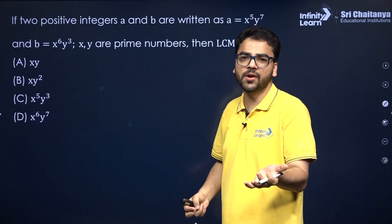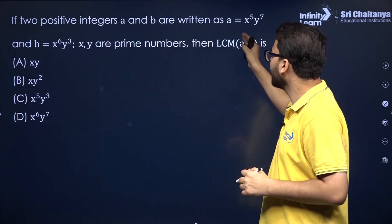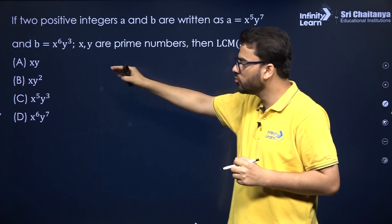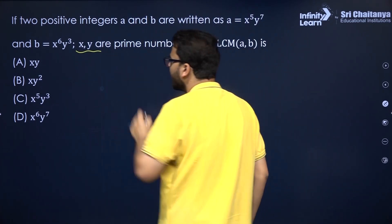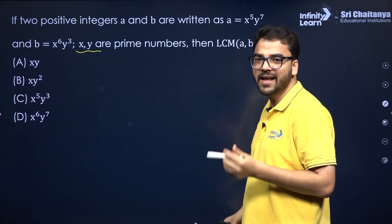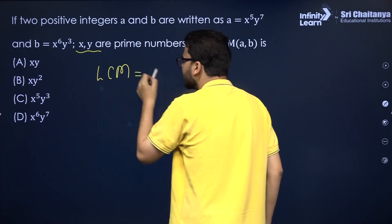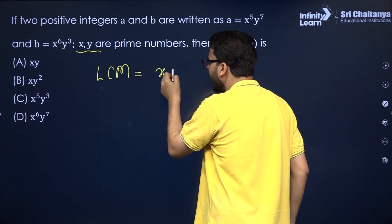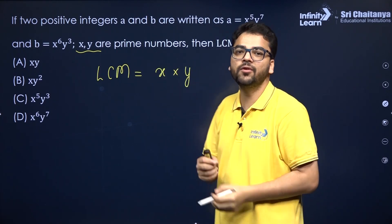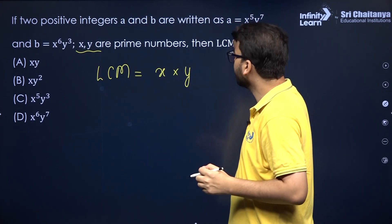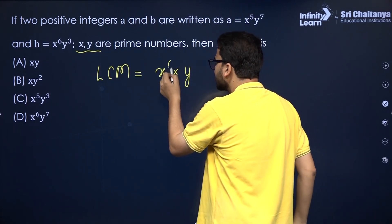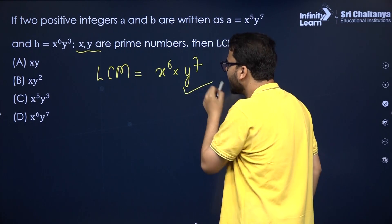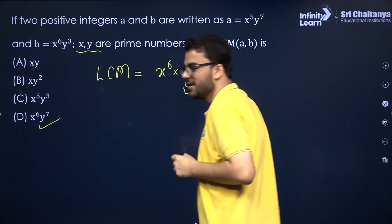Very simple question — one of the most important questions. If two positive integers A and B are written as A = x⁵y⁷ and B = x⁶y³, where X and Y are prime numbers, you have to find the LCM. For LCM, take every prime number involved and then take the highest power. So from x⁵ and x⁶, take x⁶; from y⁷ and y³, take y⁷. Therefore, the LCM is x⁶y⁷ — option B is correct.